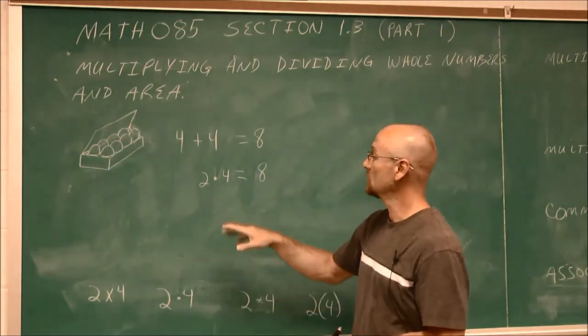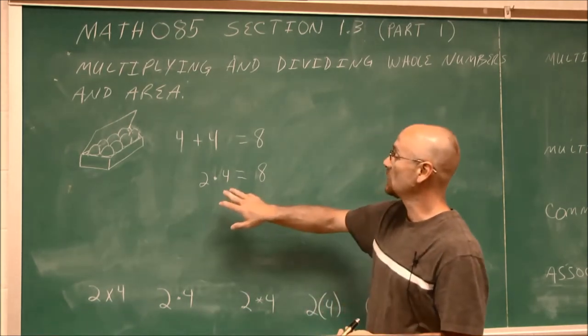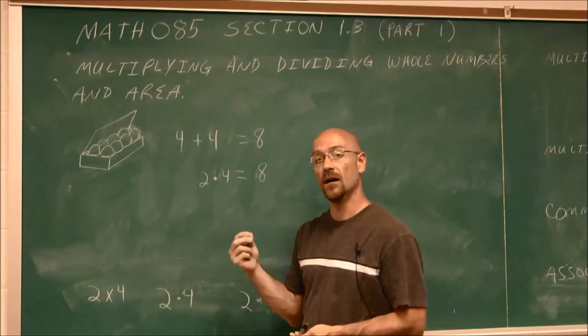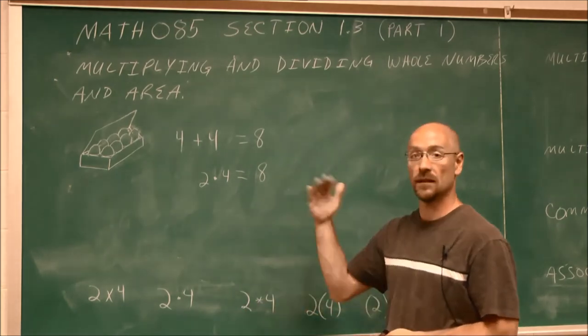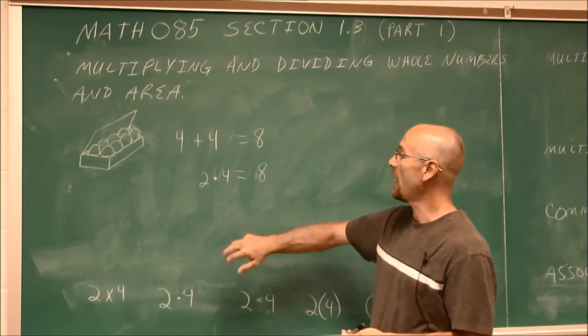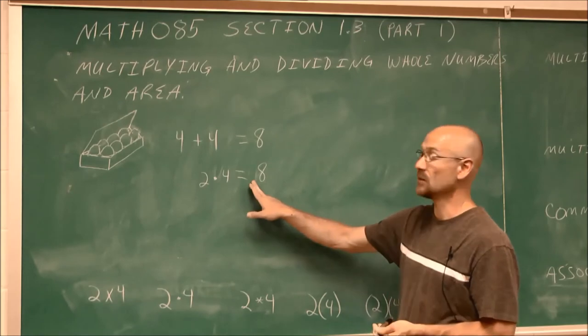Now, some of the terms I used was not just multiplication, but I also said the word times and I used the word of. Of is a key word in a lot of application problems that tell us to multiply. I have two rows of four eggs, which gives me a total of eight eggs.